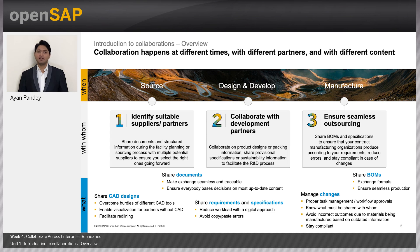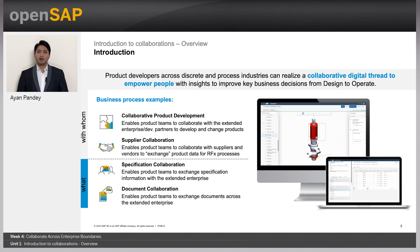In the process, the various exchanges that happen include CAD designs, documents, requirements, specifications, bill of materials, in a process-driven manner. Product developers across discrete and process industries can realize a collaborative digital thread to empower people with insights to improve key business decisions from design to operate.